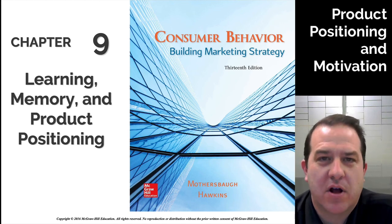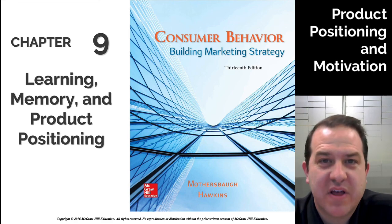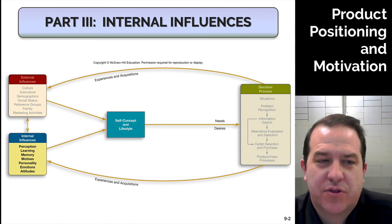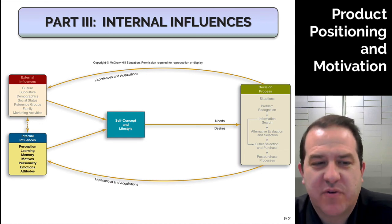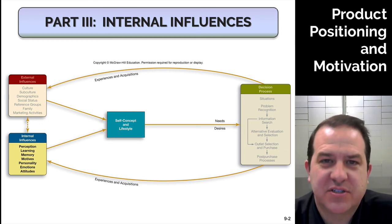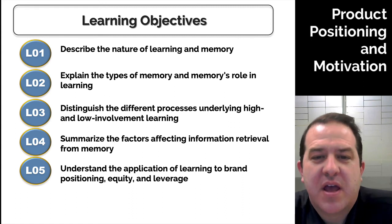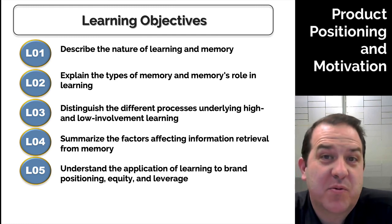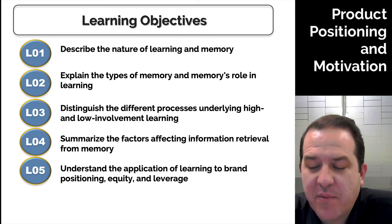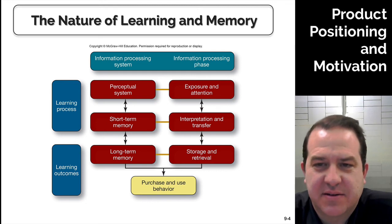There are lots of concepts in this chapter you can read through. I'm going to do a high-level overview. We are in Part 3 of this framework, which is Internal Influences — what's in someone's head, which is where all the magic happens. We're going to talk about the nature of learning and memory, high and low involvement learning, how people retrieve thoughts and memories, and how we can use all this information for positioning. Let's look quickly at the information processing system.